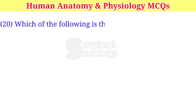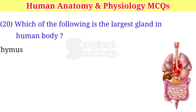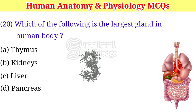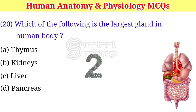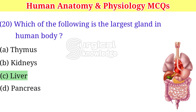Which of the following is the largest gland in the human body? A. Thymus. B. Kidneys. C. Liver. D. Pancreas. Right answer is liver.